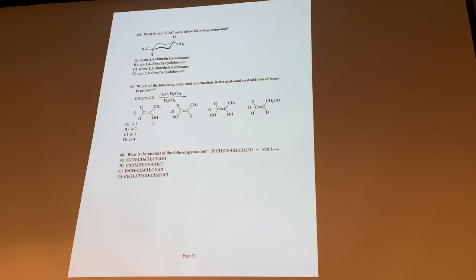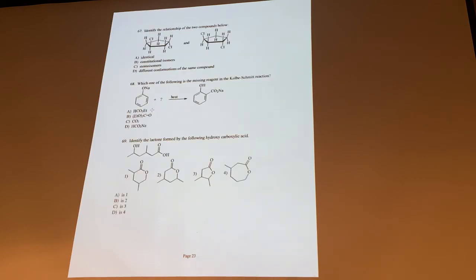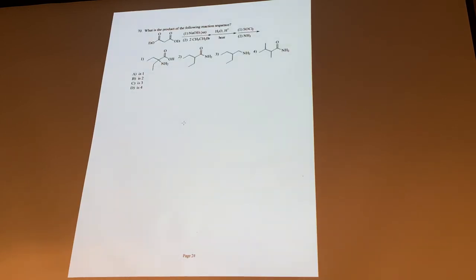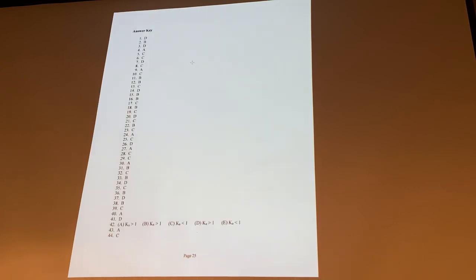Tautomerization after you hydrate alkynes — make sure you do the Markovnikov hydration, proton going on to the end, then water, then tautomerize to the ketone. In this case it's acetone, so the correct answer is A1 for acetone. The Kolbe-Schmidt reaction is like an enolate where the electrophile is CO2. The malonic ester synthesis: at the end you do the decarboxylation because there's heat, giving the carboxylic acid; form the acid chloride with thionyl chloride; then form the amide with ammonia. B is the correct answer there.